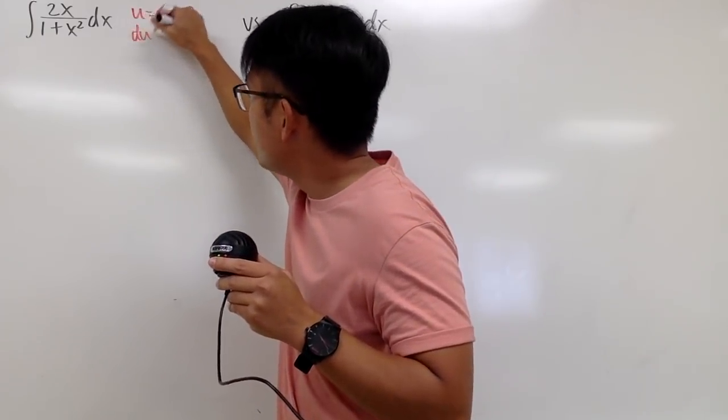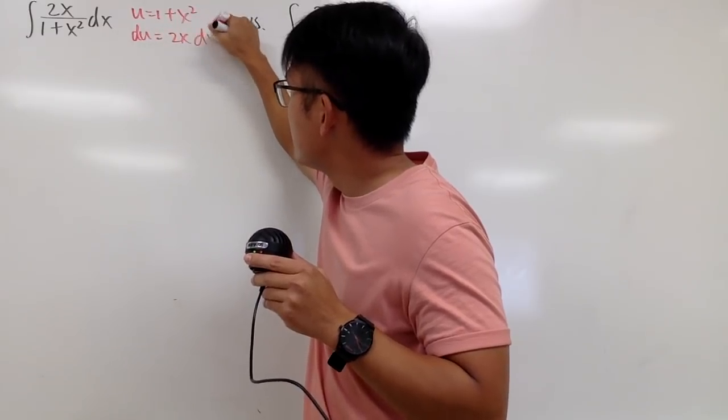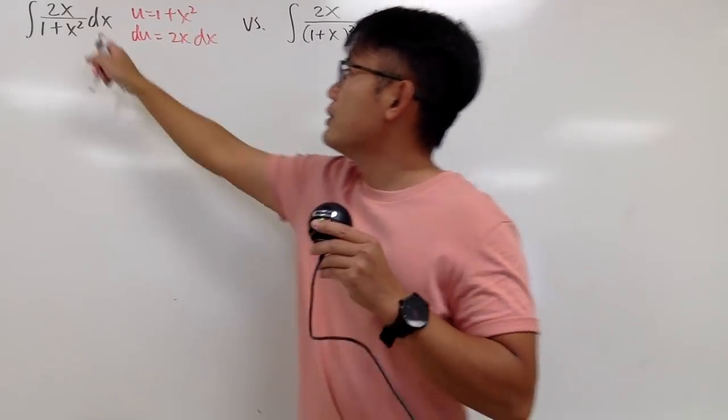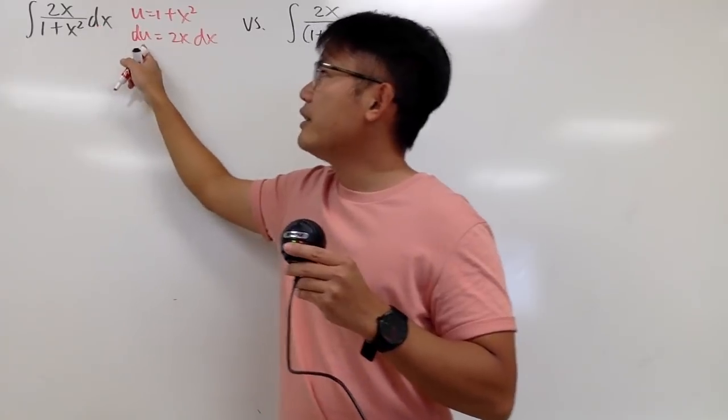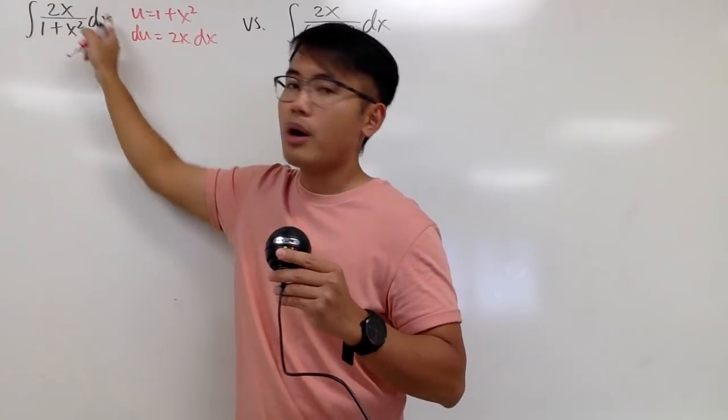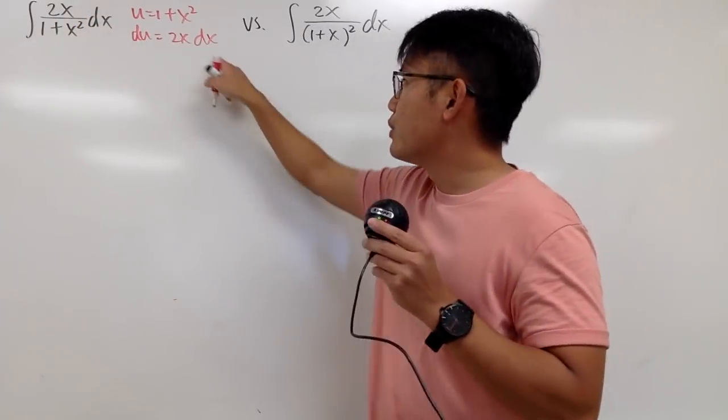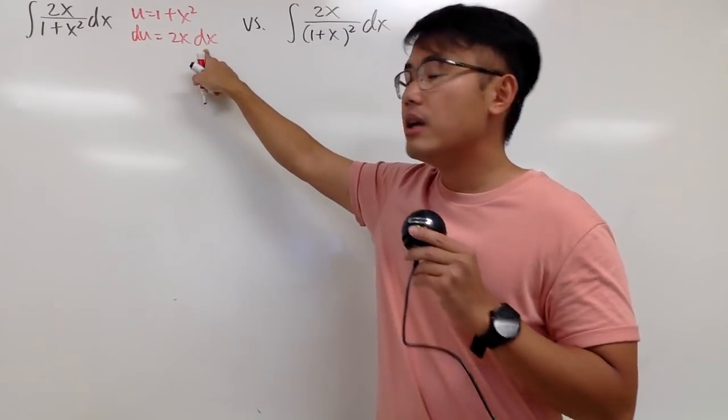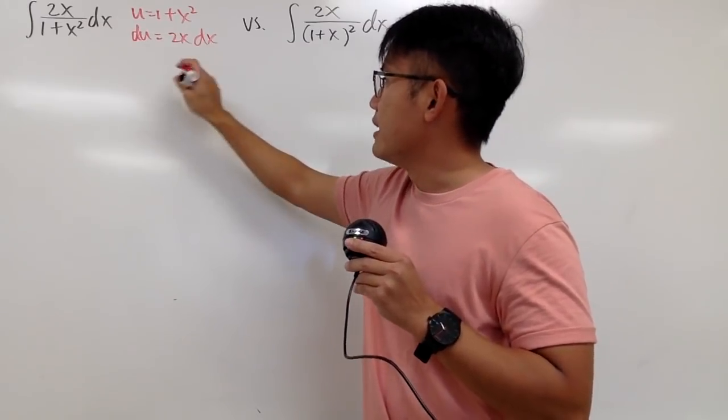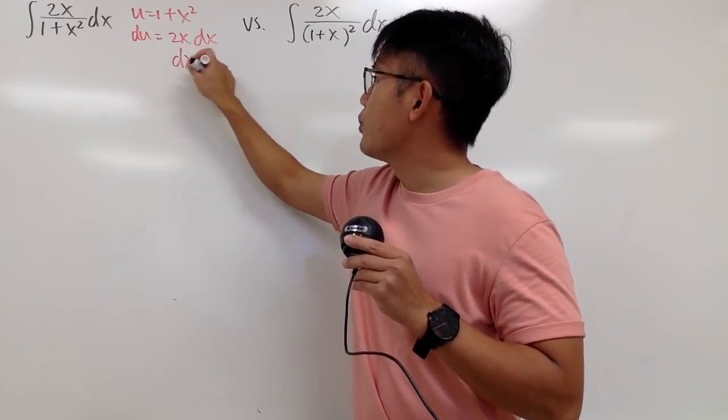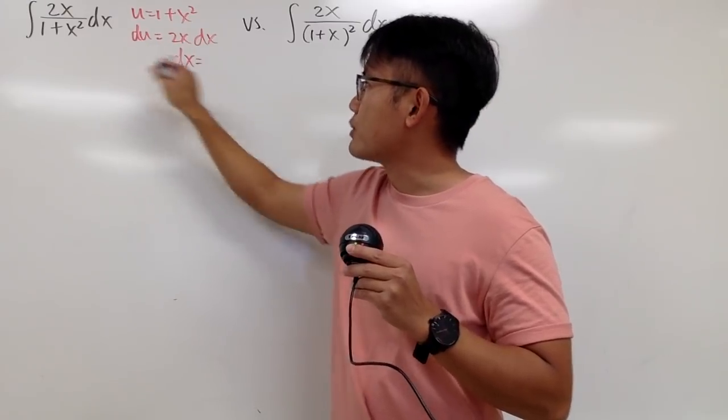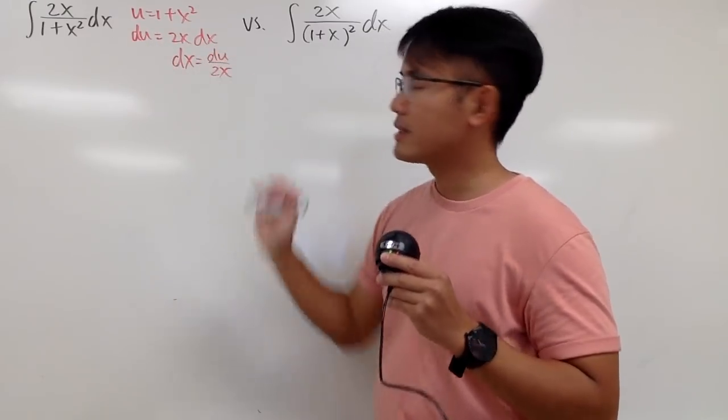so we choose 1 plus x squared. Differentiate, we get du equal 2x dx. And you do see that we have 2x dx, and you can put a du for this part right here. But I'd like to just show you guys the calculation. So let me isolate the dx, and I get dx equal divide 2x on both sides. So I get du over 2x.